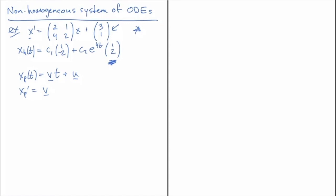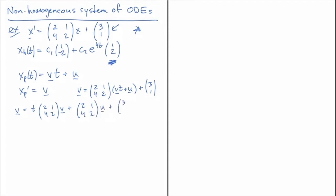Plugging in x_p, the equation becomes: v = A·(vt + u) + (3, 1), where A is the matrix (2,1; 4,2). Multiplying it all out, since t is a scalar we bring it out in front: v = (2,1; 4,2)·v · t + (2,1; 4,2)·u + (3, 1).